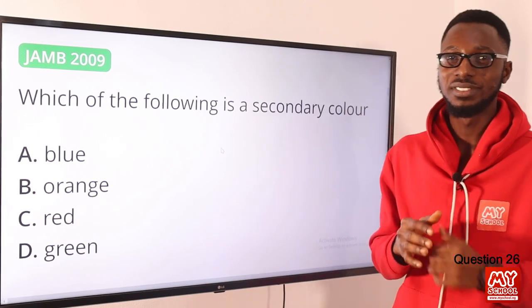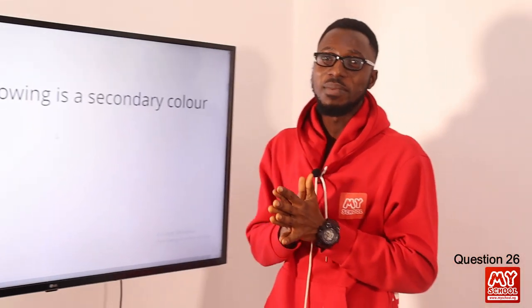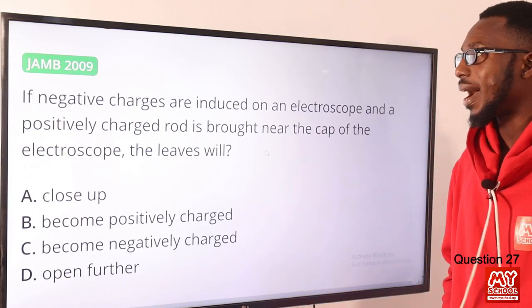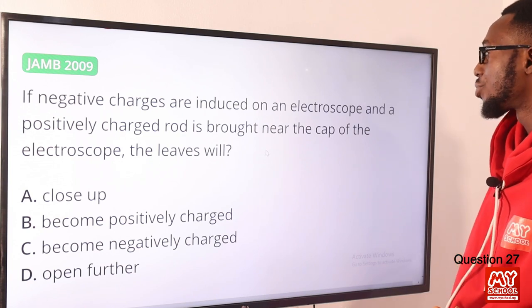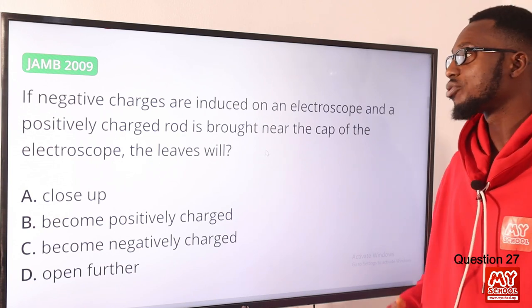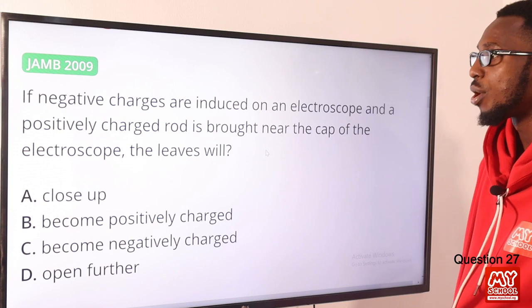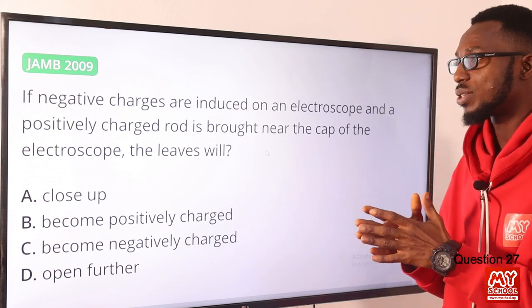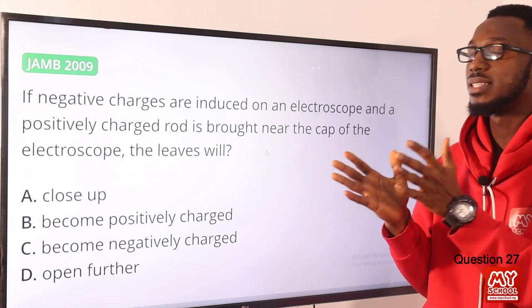Please send us more motivation by hitting the like button, clicking subscribe, and tapping the bell notification so you're alerted when we upload the next video. Question 27: If negative charges are induced on an electroscope and a positively charged rod is brought near the cap of the electroscope, what do the leaves do?